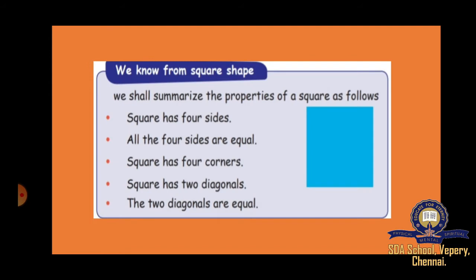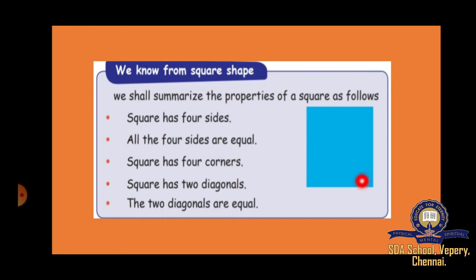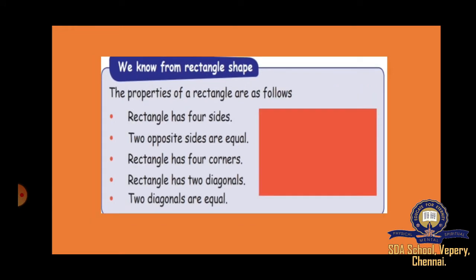A square has four sides, and all four sides will be equal. It has four corners — one, two, three, four — and two diagonals, which is a joining line. The two diagonals will be equal.